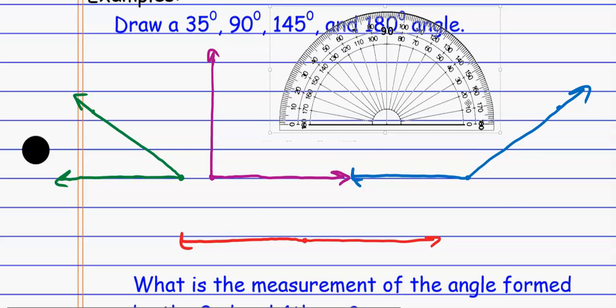The last thing that I might do here is this right angle. I might label with a little box. That symbol means that I have a right angle. So anytime we see that symbol, it's like telling me that it's a 90 degree angle without actually showing me the measurement.